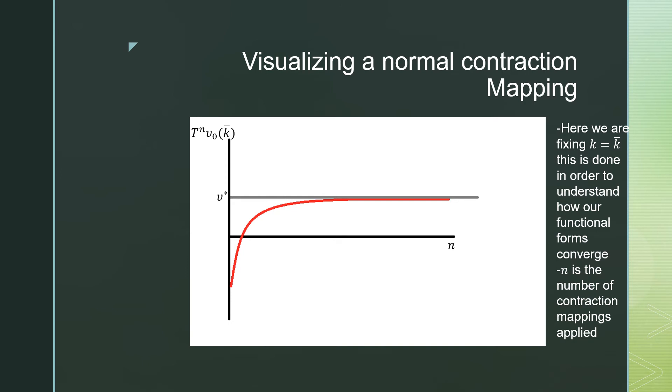And along the horizontal axis is N, which is the number of contraction mappings applied. What a normal contraction mapping should look like is that we should see convergence in the functions, meaning that we should see convergence to an optimal V, which is our optimal value function.